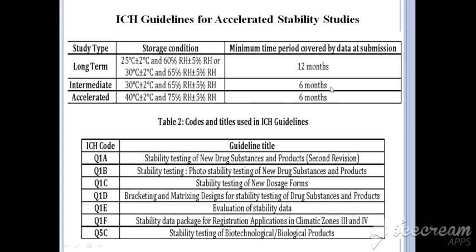For accelerated stability studies, the storage condition should be 40°C ± 2°C and 75% RH ± 5% RH, and the minimum duration to submit data to the regulatory body should be 6 months. Once a dosage form passes the criteria of long-term, intermediate, and accelerated stability studies, it can be accepted for its stability worldwide.